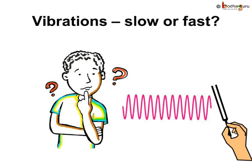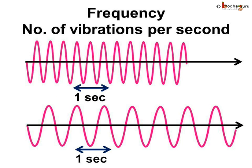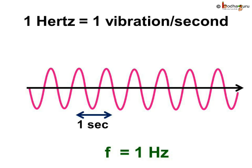Now, coming to the number of vibrations made — how do we say or represent whether the vibrations are slow or fast? The number of vibrations or oscillations per second is called the frequency of the oscillation. The frequency is expressed in hertz, and its symbol is Hz. A frequency of 1 hertz is 1 oscillation per second. We can also say 1 hertz equals 1 vibration per second.